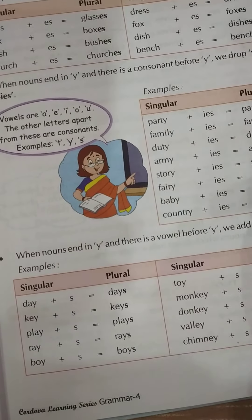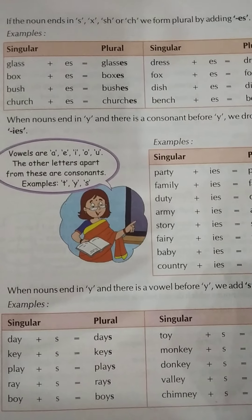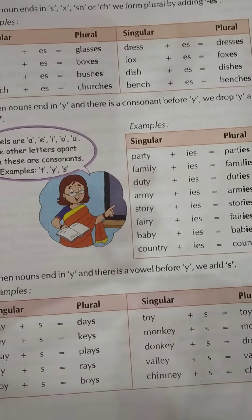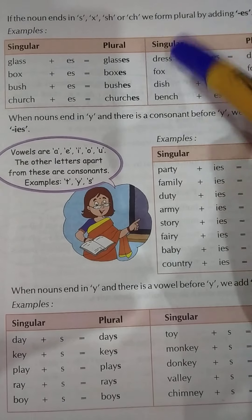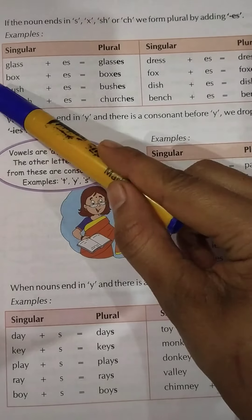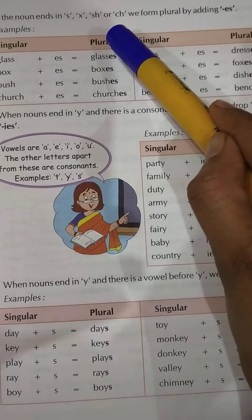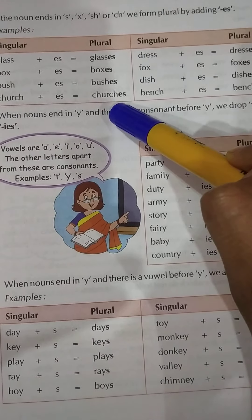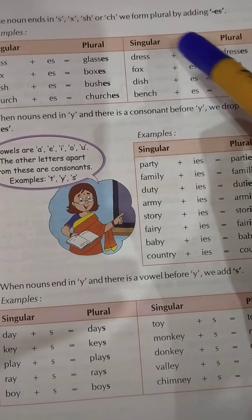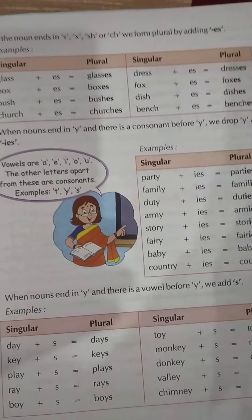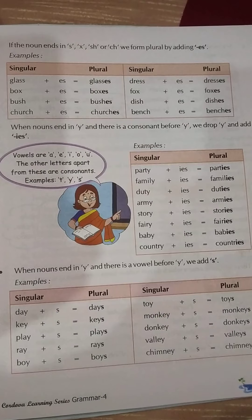If you want to perfect your grammar, you have to learn the rules by heart and practice them. If our noun ends in S, X, SH, or CH, we add ES. Like: glass → glasses, box → boxes, bush → bushes, church → churches, dress → dresses, fox → foxes, dish → dishes. So to make these nouns plural, we add ES.